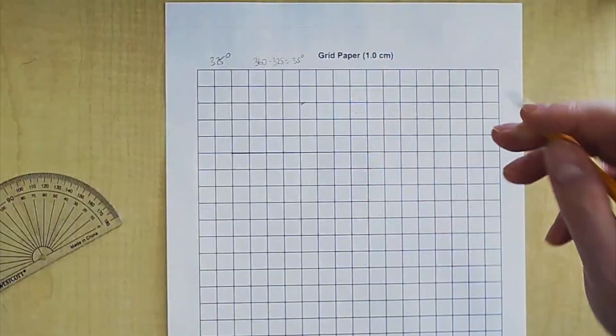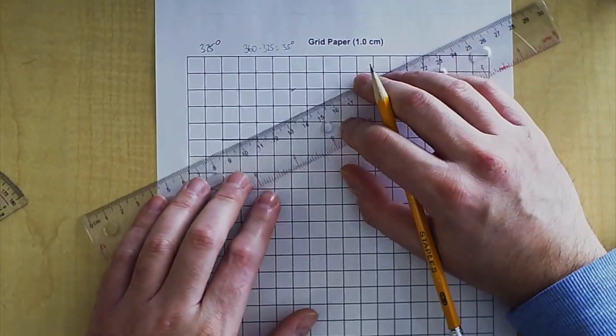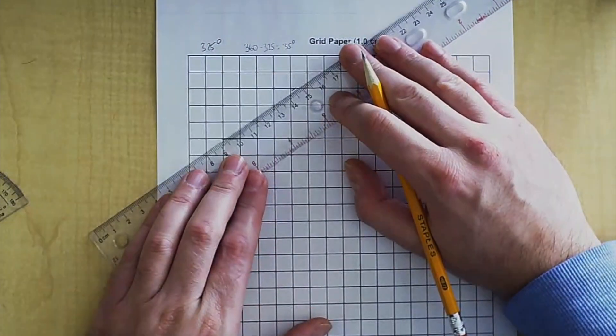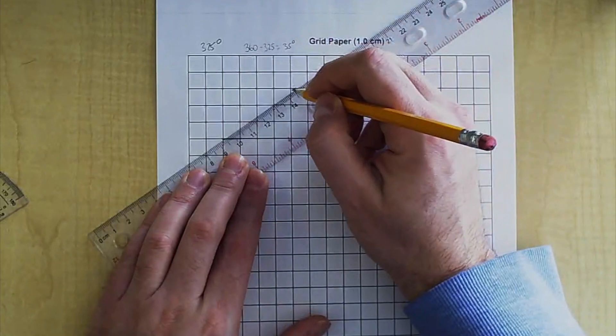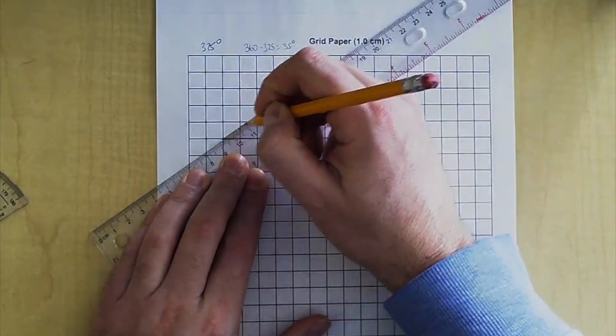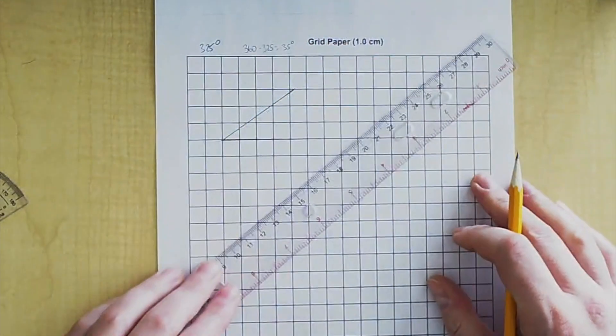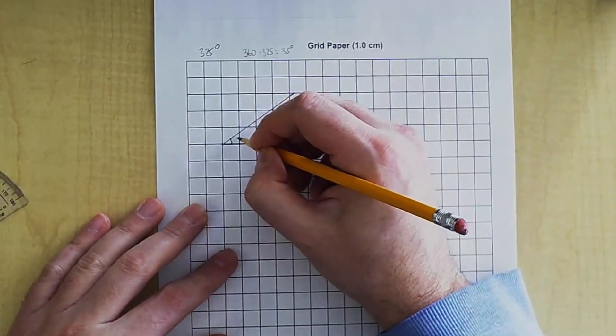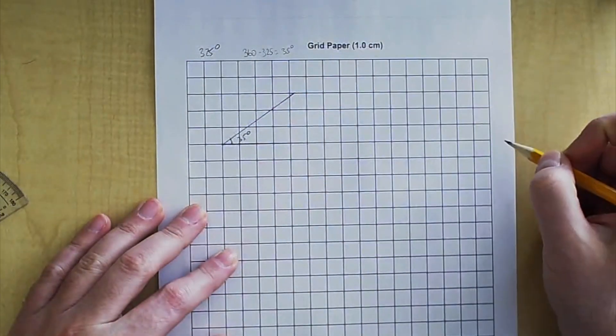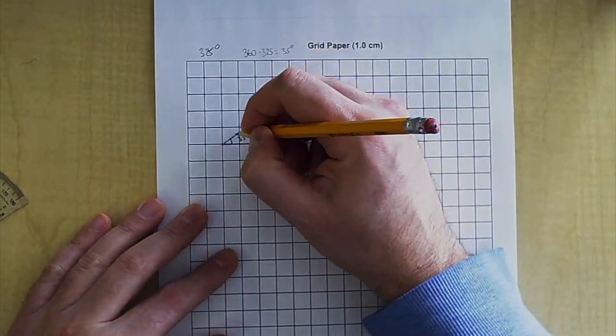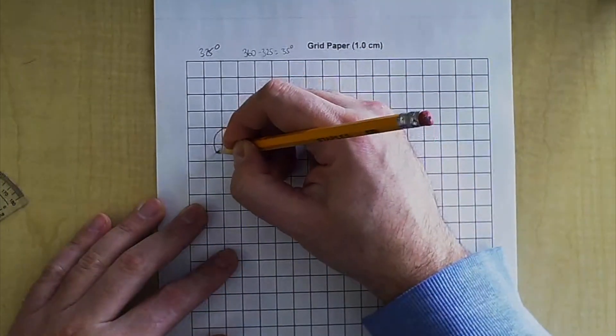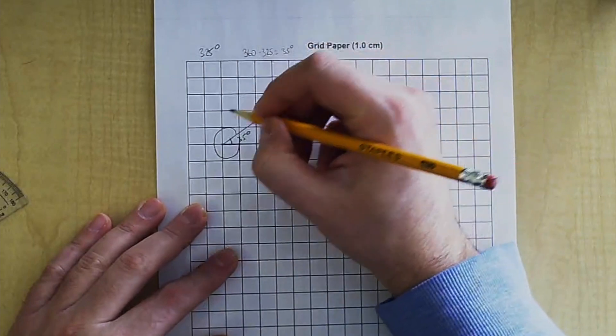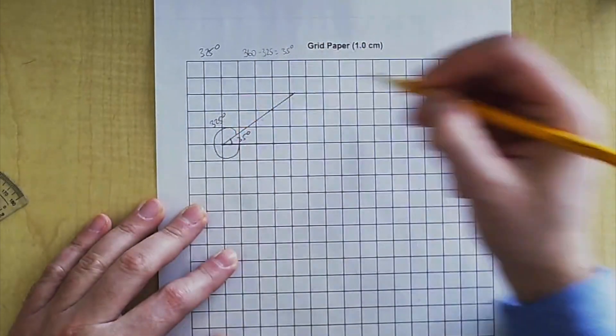Take your ruler and connect this line to the vertex. You just drew a 35 degree angle. So inside here, it's 35 degrees. But since it goes into a full circle, your reflex angle, this angle here, is 325 degrees.